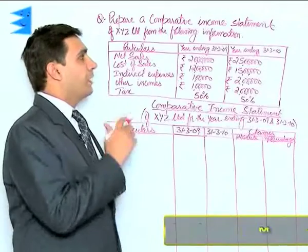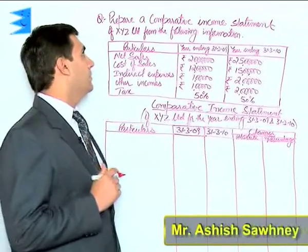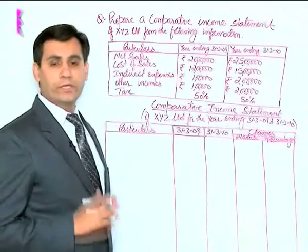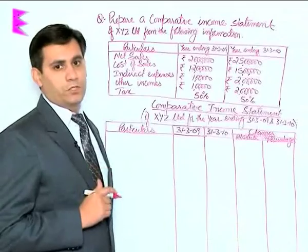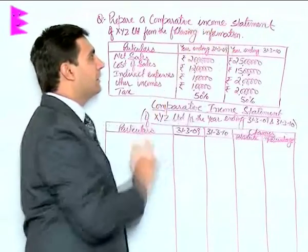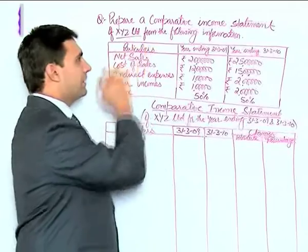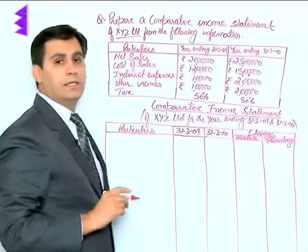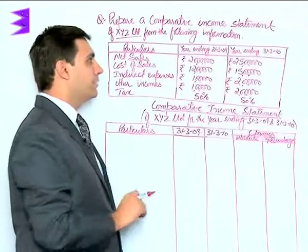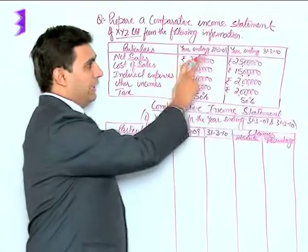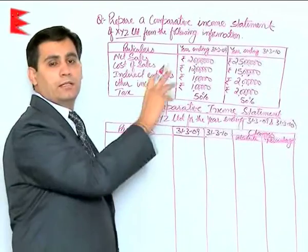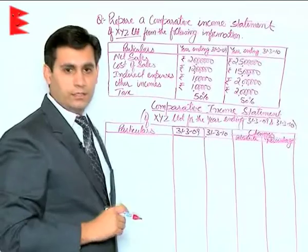Let us prepare a comparative income statement of XYZ Ltd from the following information. We are required to prepare the comparative income statement for the years ending 31st March 2009 and 31st March 2010.